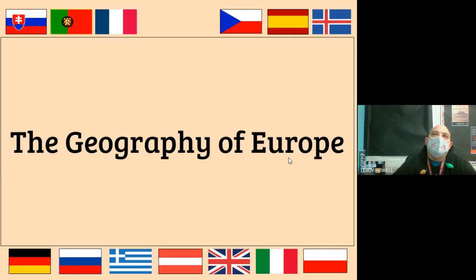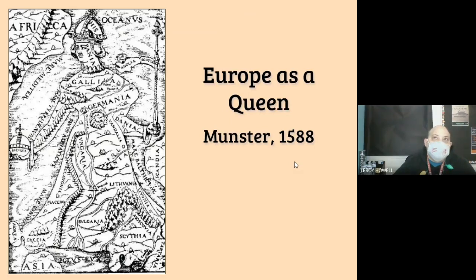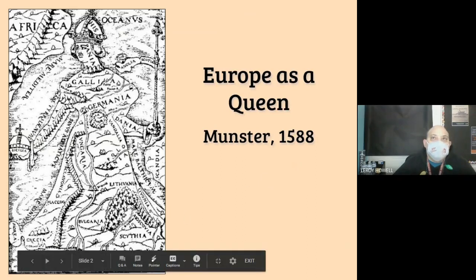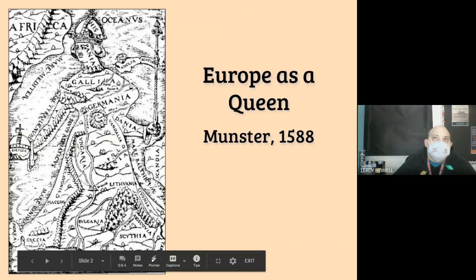So Europe as a queen — this guy named Munster from Germany in 1588 was a cartographer, and a cartographer is a map maker. Cartography is the study and making of maps. He said we can draw Europe as a queen. You can see there's a little peninsula here — here's where England, Scotland, and Ireland would be; over here would be Portugal and Spain; and this part right here would be Italy.